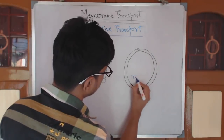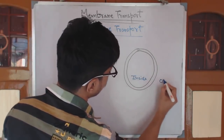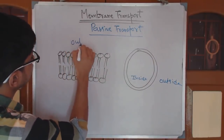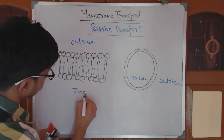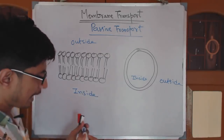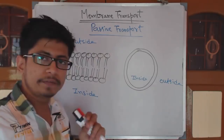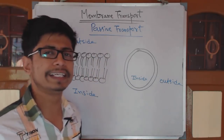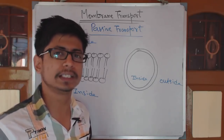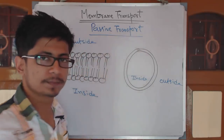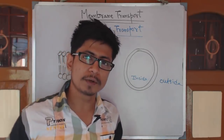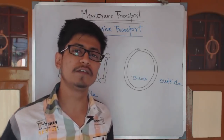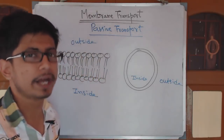This is the inside and this is the outside of the cell. So what happens in passive transport? There are very few properties of passive transport to remember. Passive transport does not require any sort of ATP or energy, because in passive transport molecules are moving from high concentration to low concentration. It is movement down the concentration gradient, so we do not require any energy input.